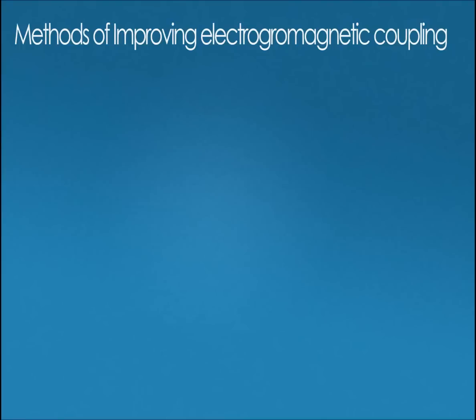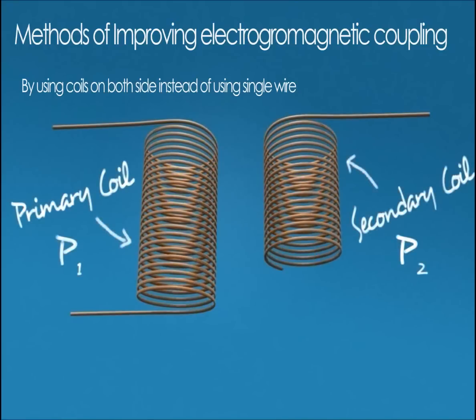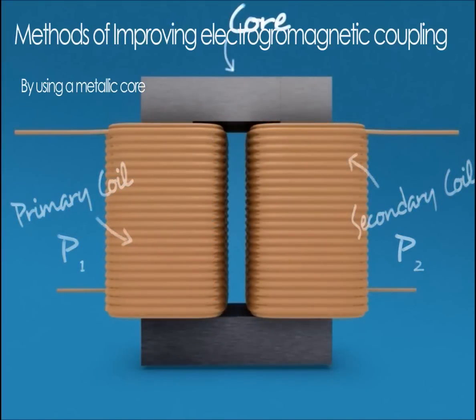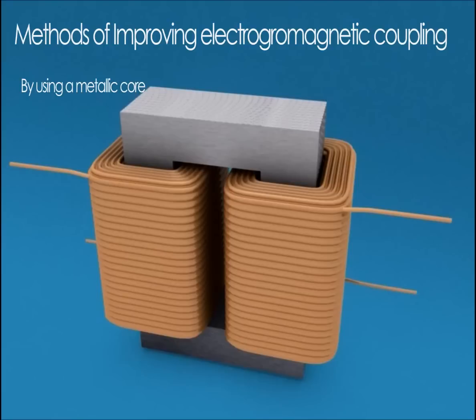Number one: by using coil on both sides instead of using single wire, which results in increase of flux. Number two: by using a magnetic core between the coils which gives low reluctance path to the flux and improves magnetic coupling between the coils.